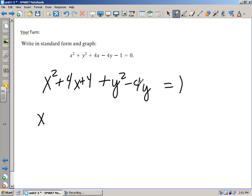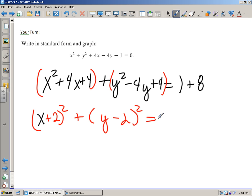Now this guy, half of negative 4 is negative 2. Negative 2 squared is positive 4. So I added 4 here. I added 4 here. On this side, I've got to add 8. So I've got this together. This guy right here, he's going to factor out to be x plus 2 squared plus y minus 2 squared equals 9. My center is going to be at negative 2, 2. And then my radius is going to be 3.